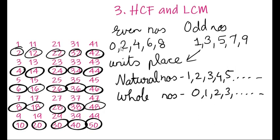One more thing we have to recall about even numbers: if you look at the even numbers 2, 4, 6, 8, they all come in the 2 times table. So whichever numbers are circled in this list are even numbers, and all these numbers come in the 2 times table.